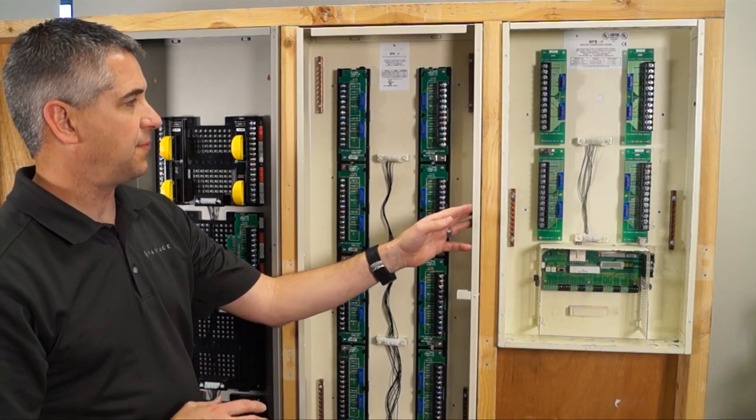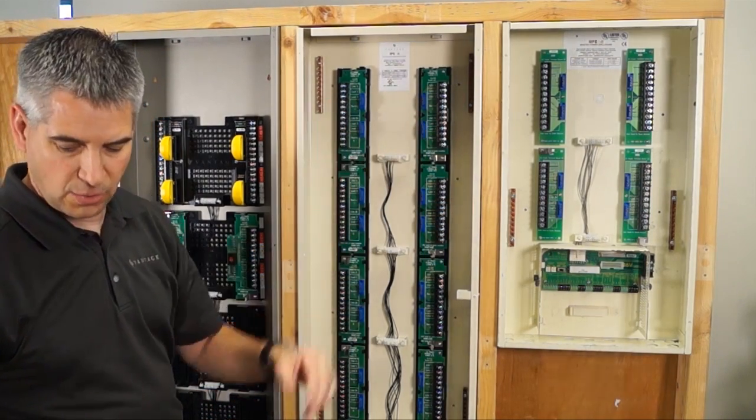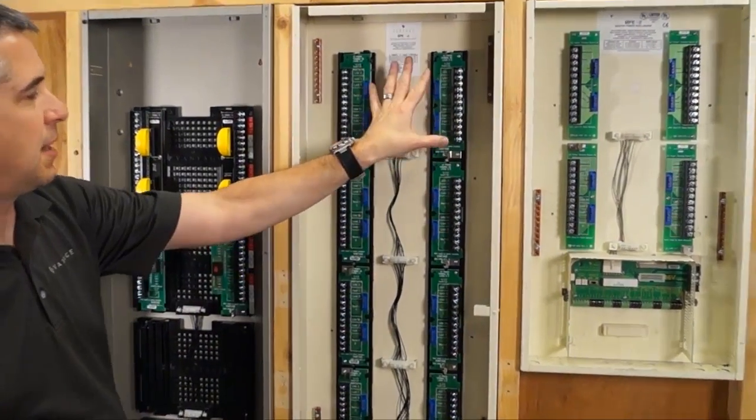In February 2005, we changed our enclosures and added these plastic inserts. To install this, we need to remove the turner board. Let's say this dimmer module up here failed.